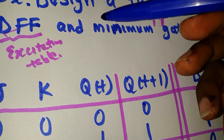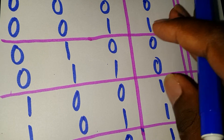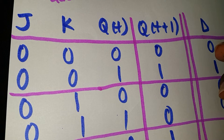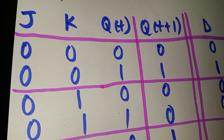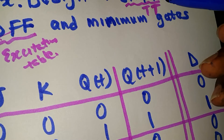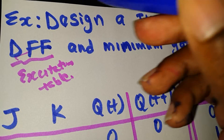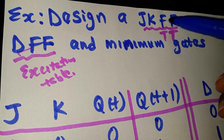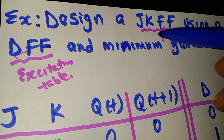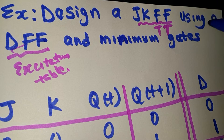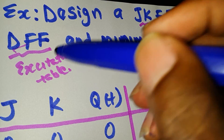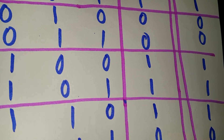We've found the truth table for the JK flip-flop and the excitation table for the D flip-flop — that is the first part of the question. I'll be talking about the circuit in the next example, but I just want you to understand how the example works. The first thing is to find the truth table of what you are trying to design, and then find the excitation table of the flip-flop you want to use to design it. Thank you for watching — see you in the next video.